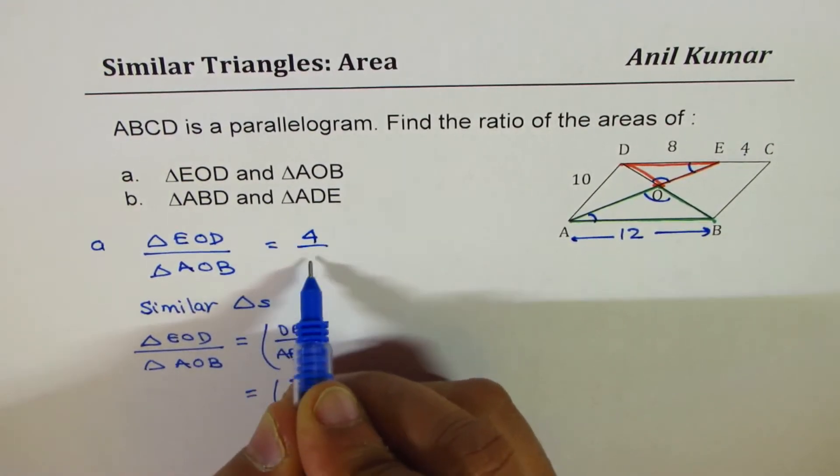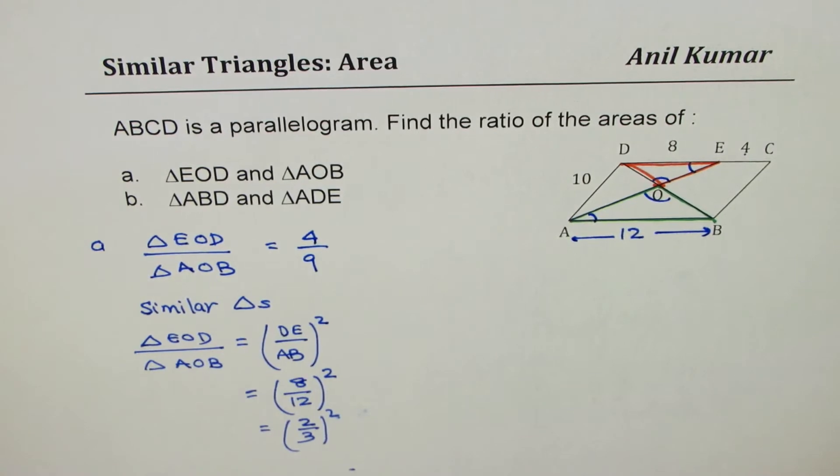So we can write this as 4 over 9 as our answer, perfect. So that gives you the solution for part A.